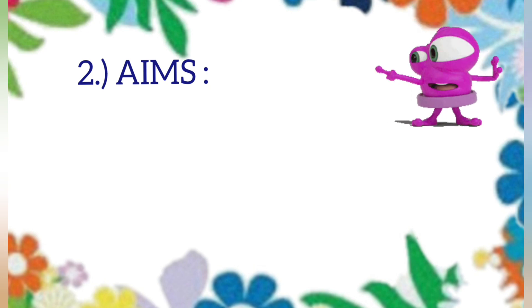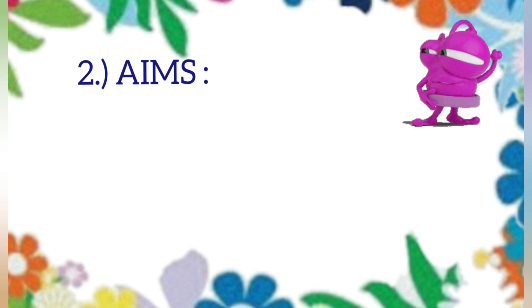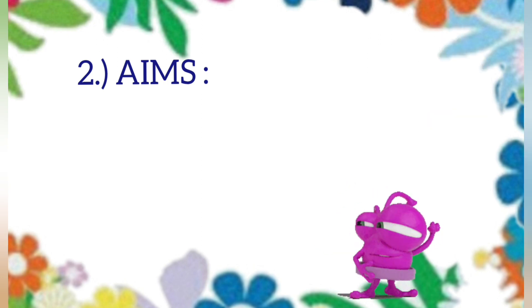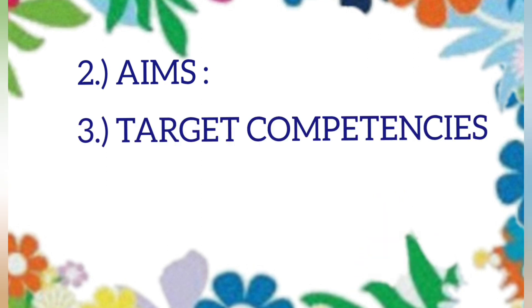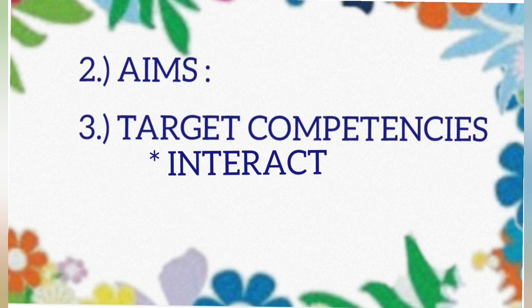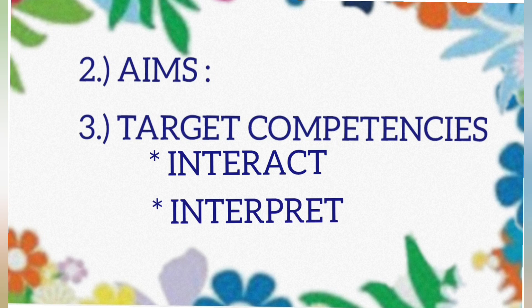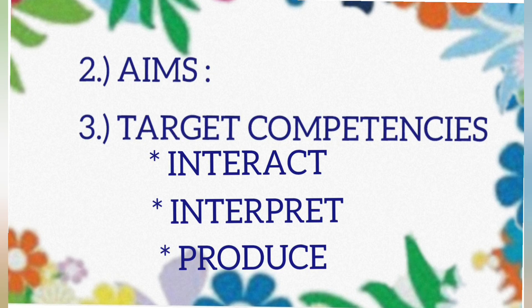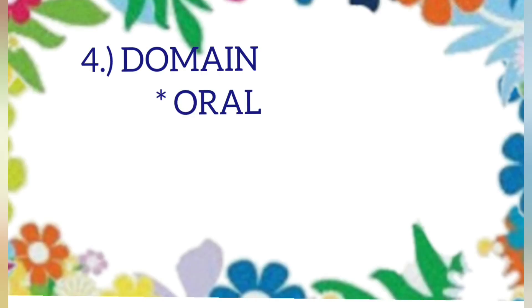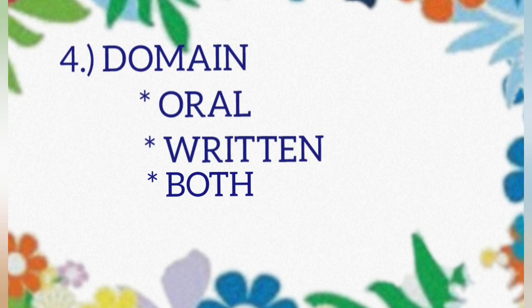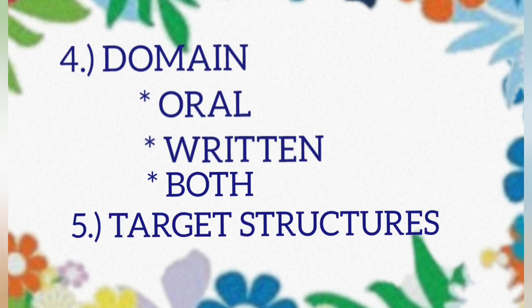Number two: the aims of the lesson — it is what you will try to get the learners to do during the lesson. Number three: the target competencies — competencies that interact, interpret, and produce. Number four: the domain — through oral, written, and both.